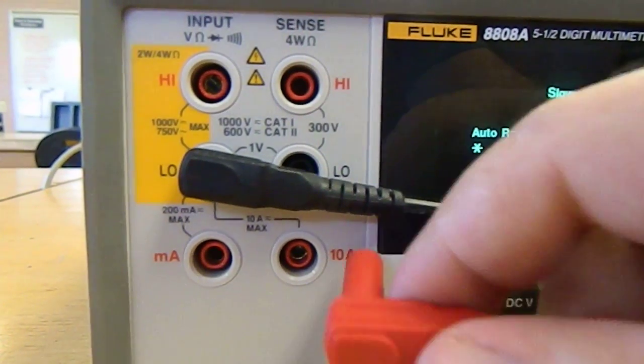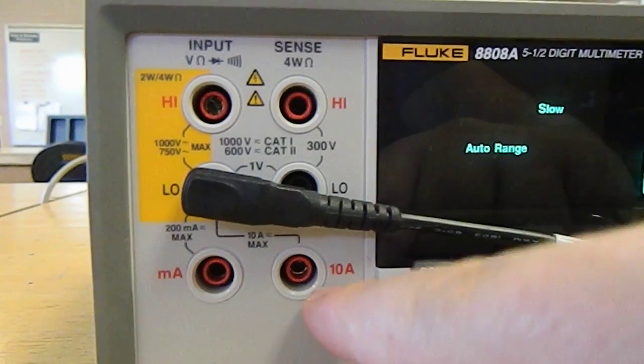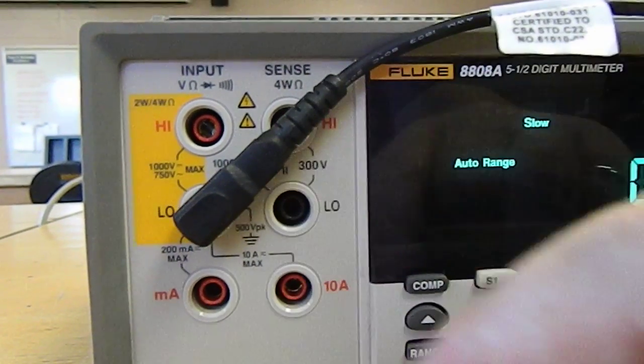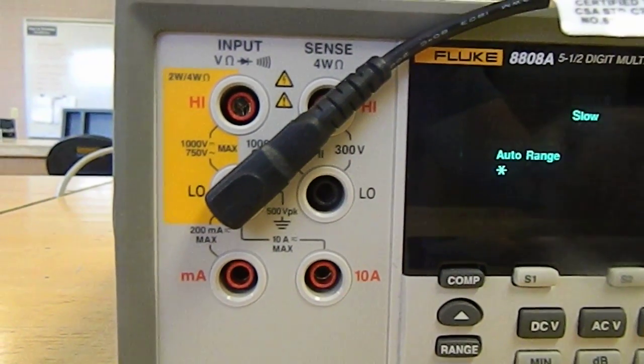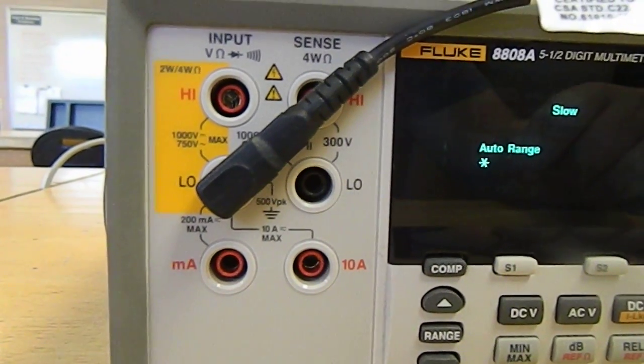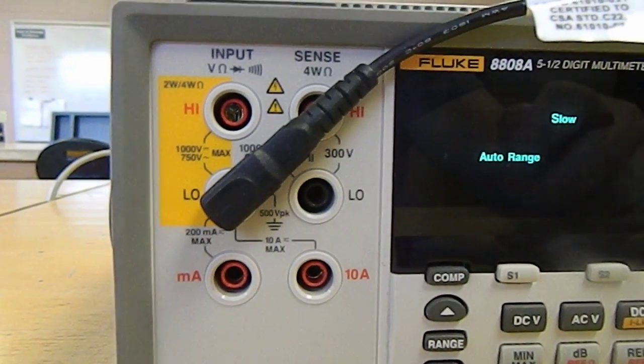And if you're connecting current, you're going to choose, most likely, the 10 amp connection down here. And the way that you can tell that this is good is that when you measure current, you need to put the multimeter in series in the circuit so that way the current travels through it and it can measure the current.